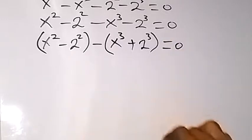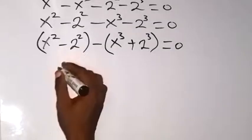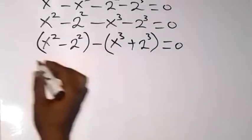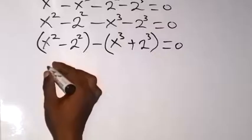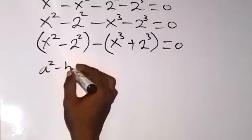And from here we have some identities that we need to take care of, such that we have difference of two squares here. We have something in the form of a squared here.